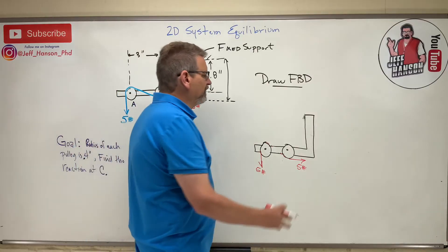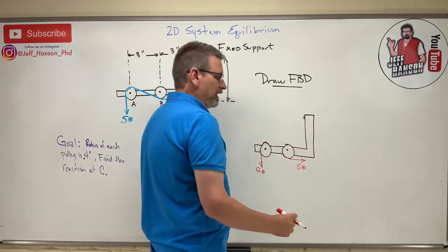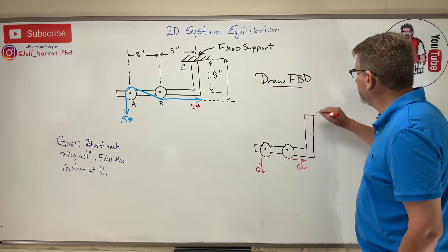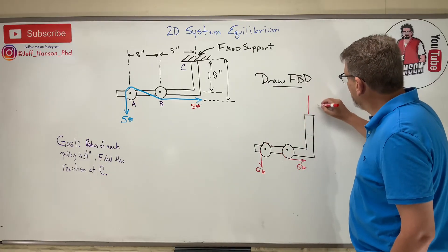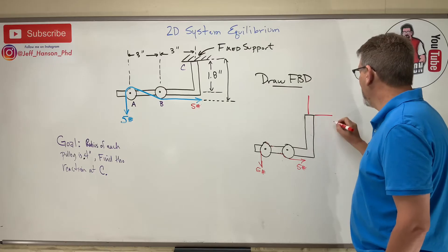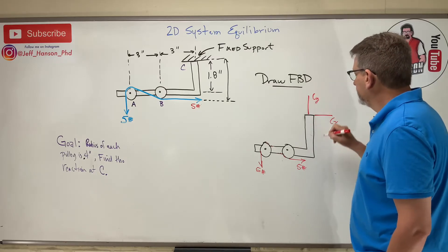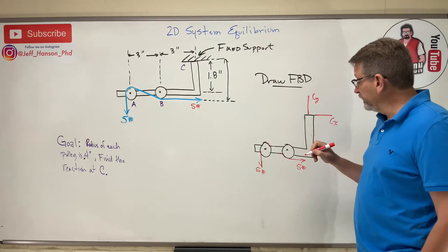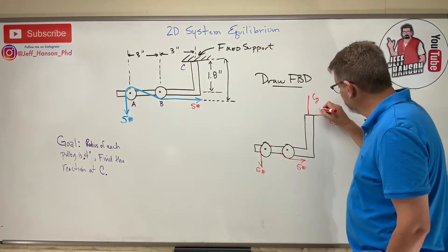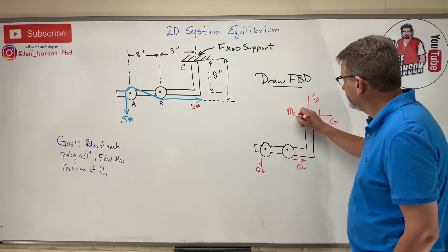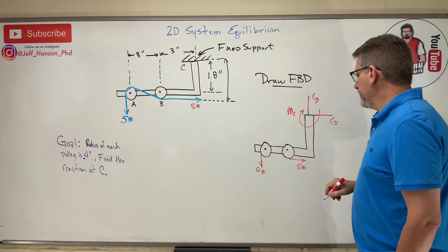And then there's point C. What's going on up there? It's a fixed connection, a fixed support. Fixed supports have an x, a y - there's Cx, there's Cy - and they also have this, which is the one that students usually leave off: they also have a moment.